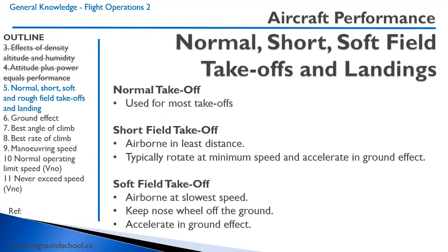Let's talk about some takeoffs and landings. This is a major part of in-flight training, so I'll briefly go over it here. A normal takeoff is used for most situations. A short-field takeoff aims to be airborne in the least distance — you typically rotate at minimum speed and then accelerate in ground effect. A soft-field takeoff gets airborne at the slowest speed, keeping the nose off the ground as long as possible and accelerating in ground effect after takeoff.